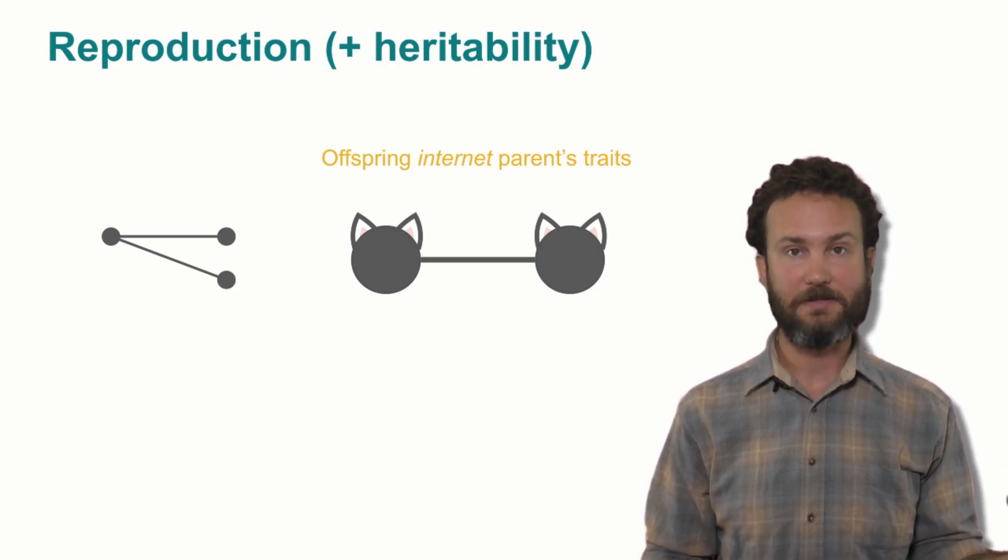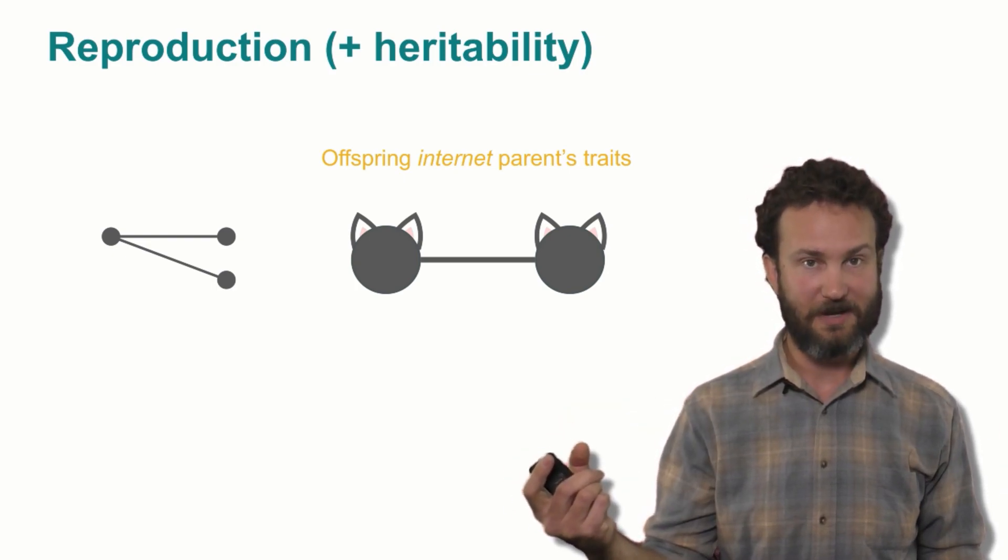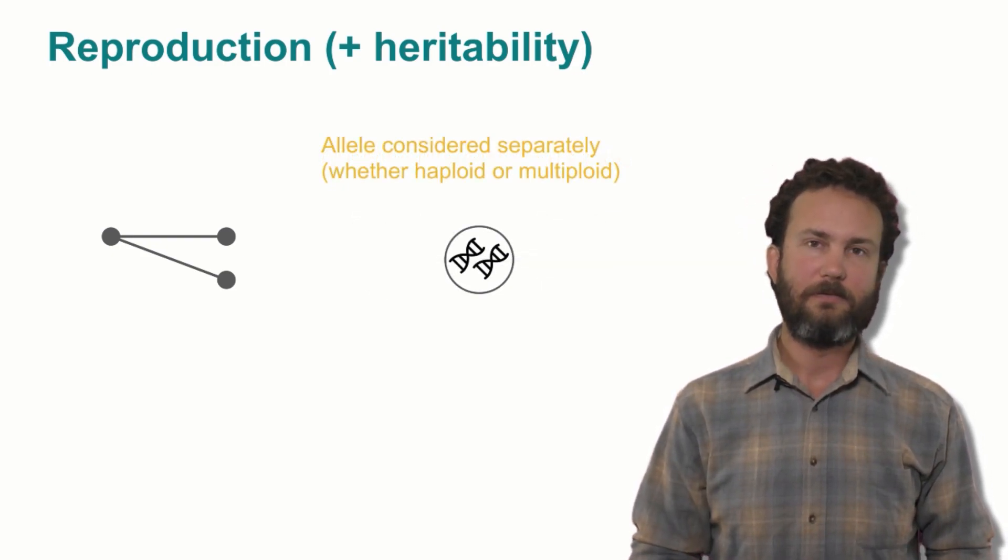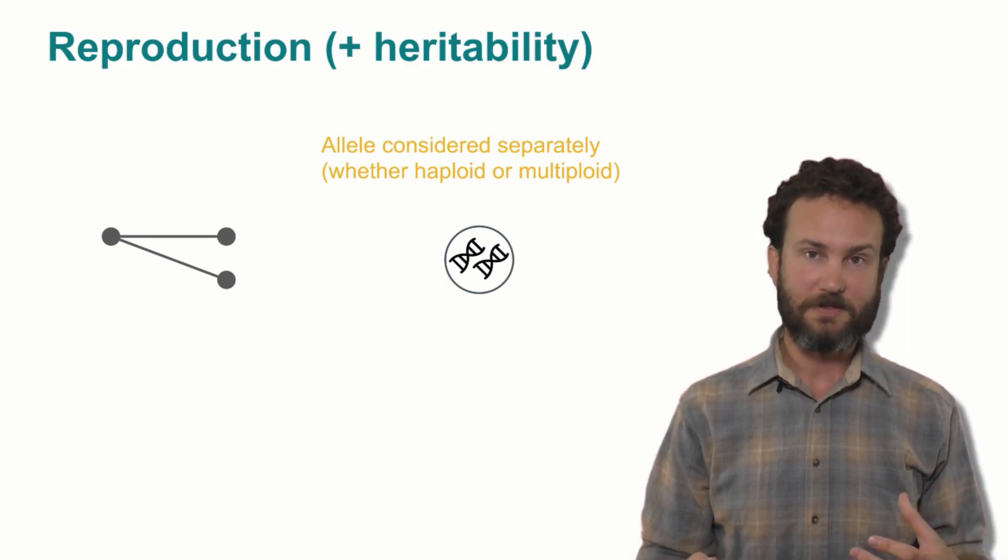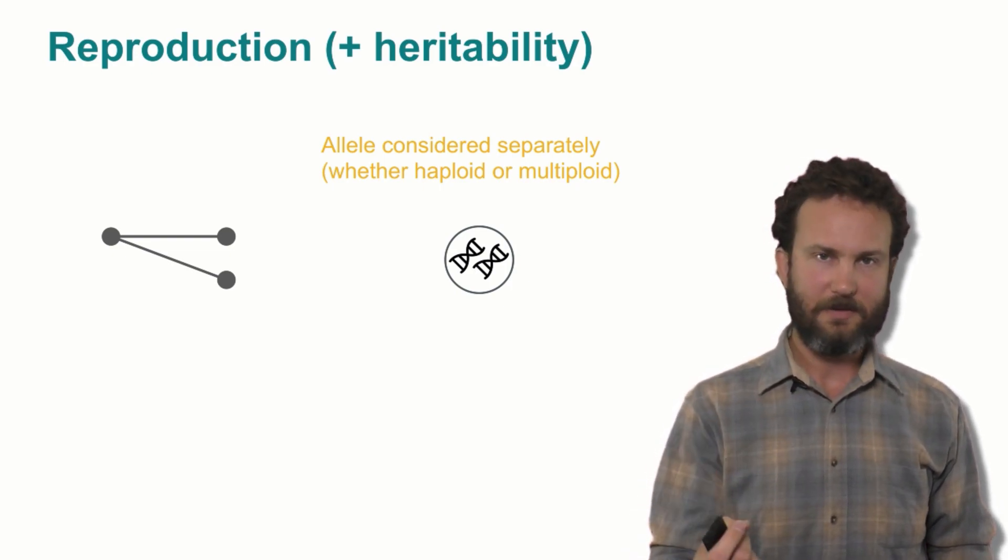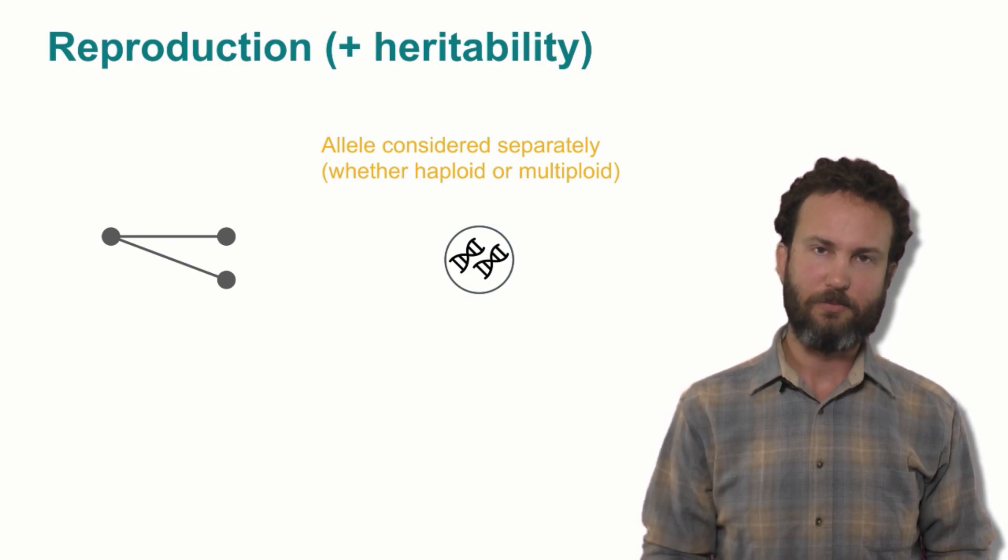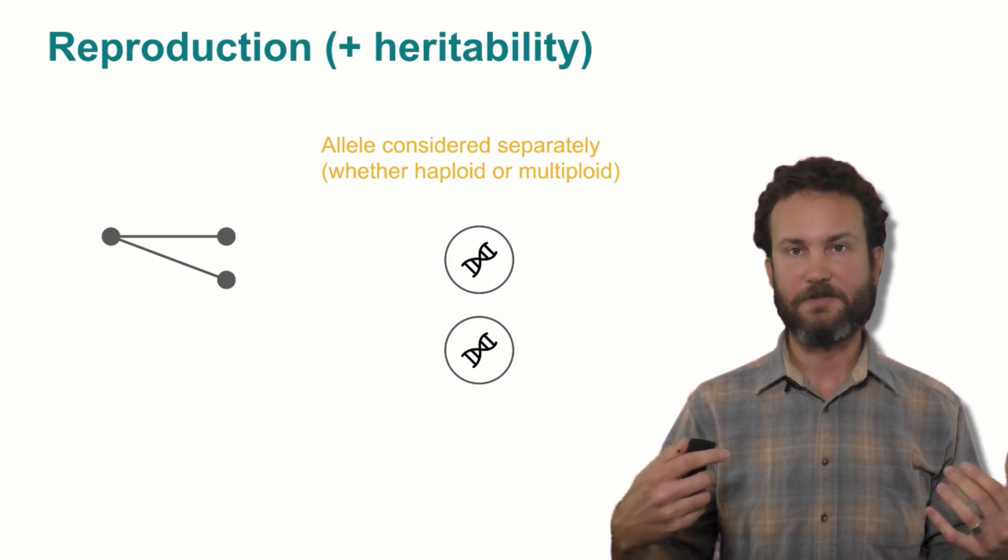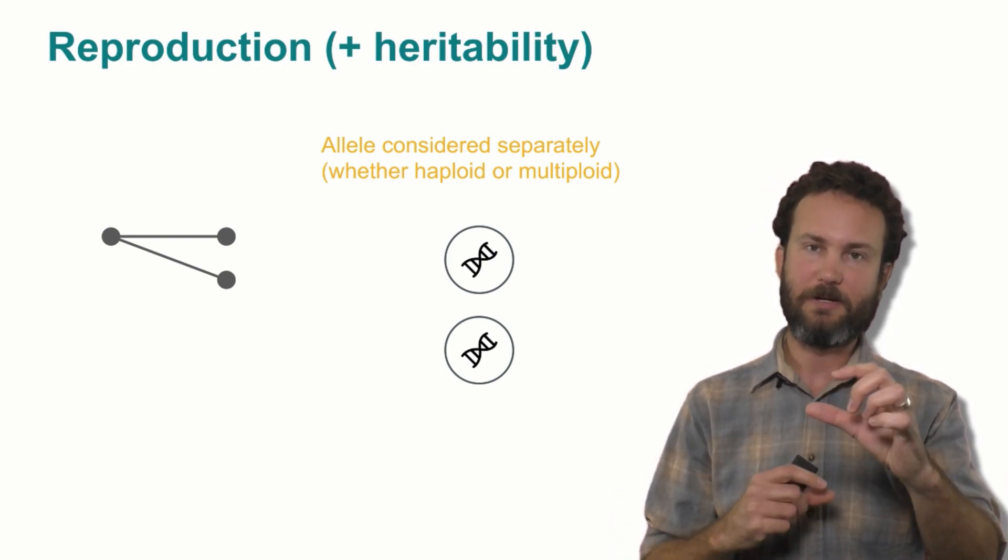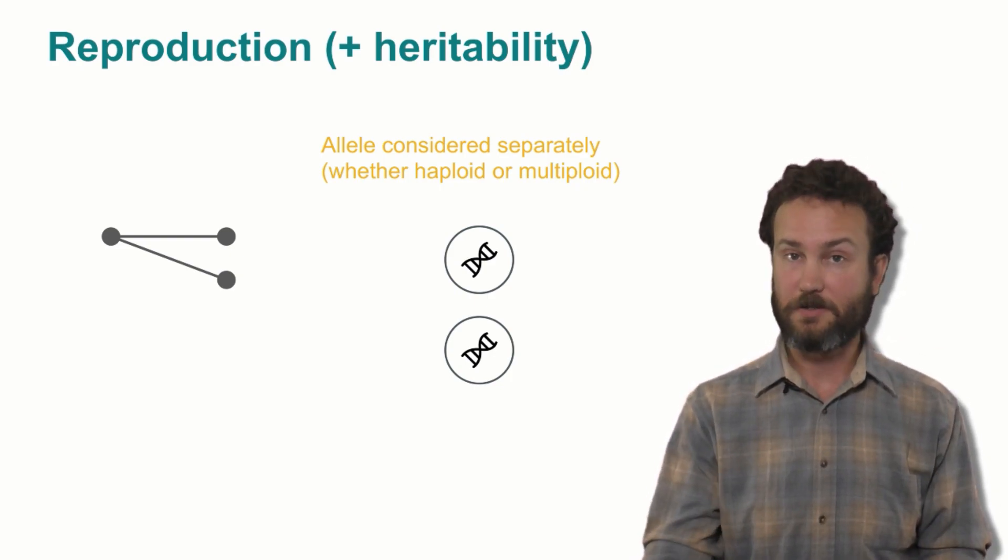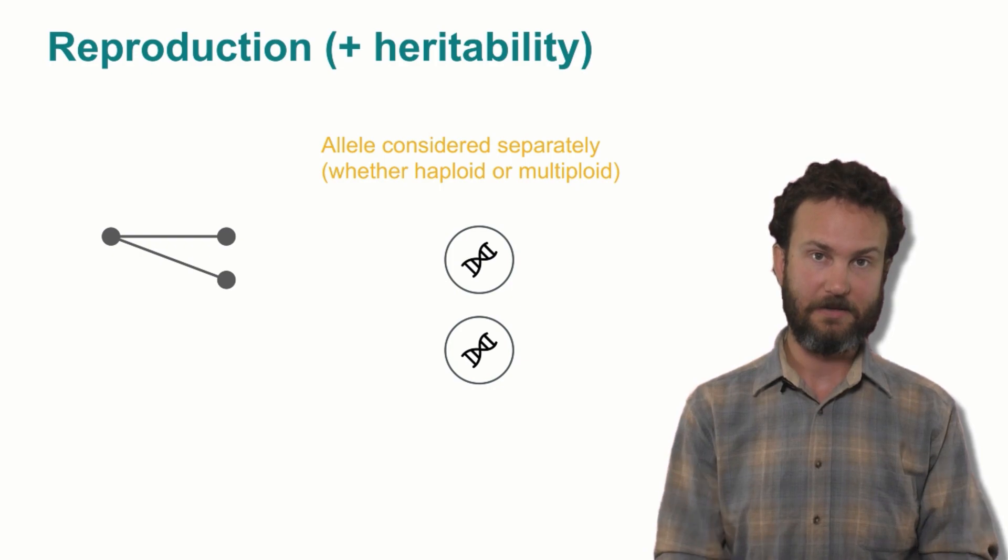This means that if a parent has cat ears, an offspring will have cat ears. And you might also know that in organisms, there might be different numbers of units of DNA, different numbers of chromosomes or different copies. And we get around this issue in the theory that I'll present by treating each copy separately. So if an organism is a diploid, we treat each copy of a chromosome separately. And this assumption is robust under the additional assumption of random mating in a population.